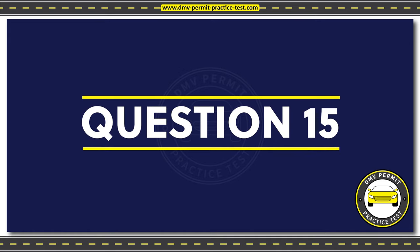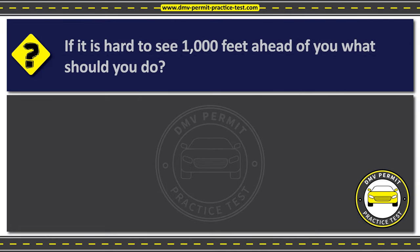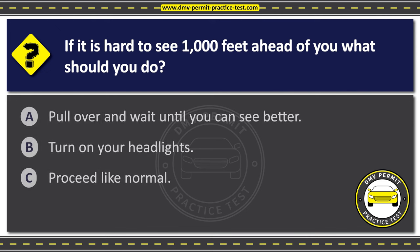Question 15. If it is hard to see 1,000 feet ahead of you, what should you do? Option A: Pull over and wait until you can see better. Option B: Turn on your headlights. Option C: Proceed like normal. The correct answer is Option B: Turn on your headlights.